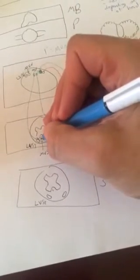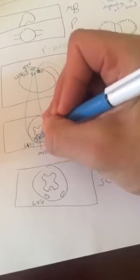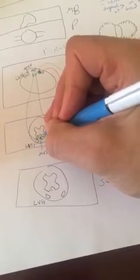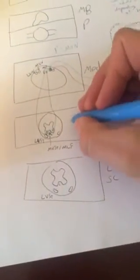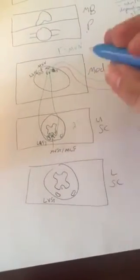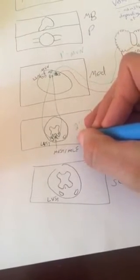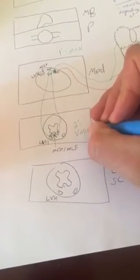Once it has moved in that tract, then it's going to go into my anterior motor horns and synapse. So my second nerve body then is in my ventral motor horns.